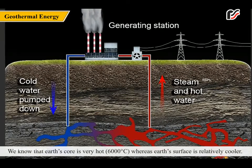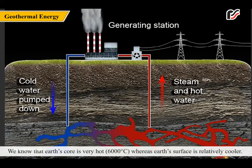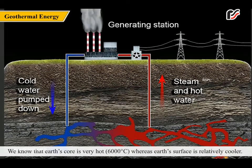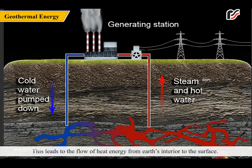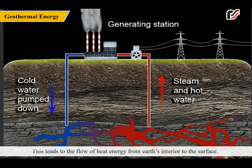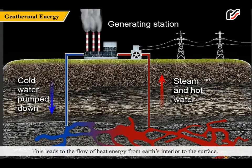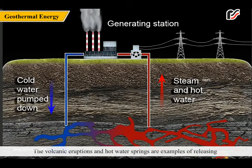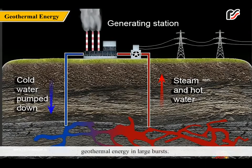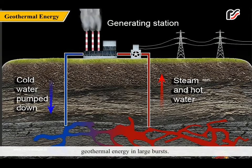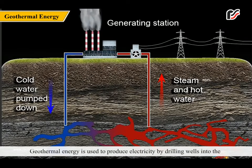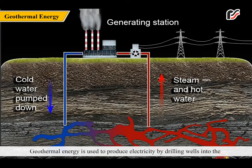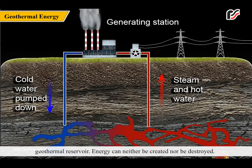We know that Earth's core is very hot — 6000 degrees Celsius — whereas Earth's surface is relatively cooler. This leads to the flow of heat energy from Earth's interior to the surface. Volcanic eruptions and hot water springs are examples of releasing geothermal energy in large bursts. Geothermal energy is used to produce electricity by drilling wells into the geothermal reservoir.